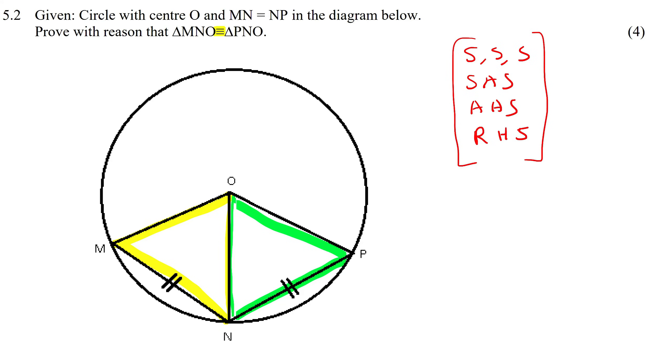We need to prove things that are the same in these two triangles. The first thing I would say is that these two are the same. So I would say MN is equal to NP, and that they gave us. So I'm just going to say given.